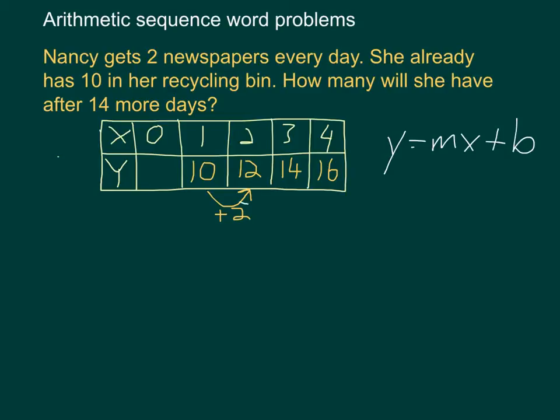If we know she has two newspapers every day, we know that the m is going to be 2. To figure out b, we have to know what happens when x equals zero.